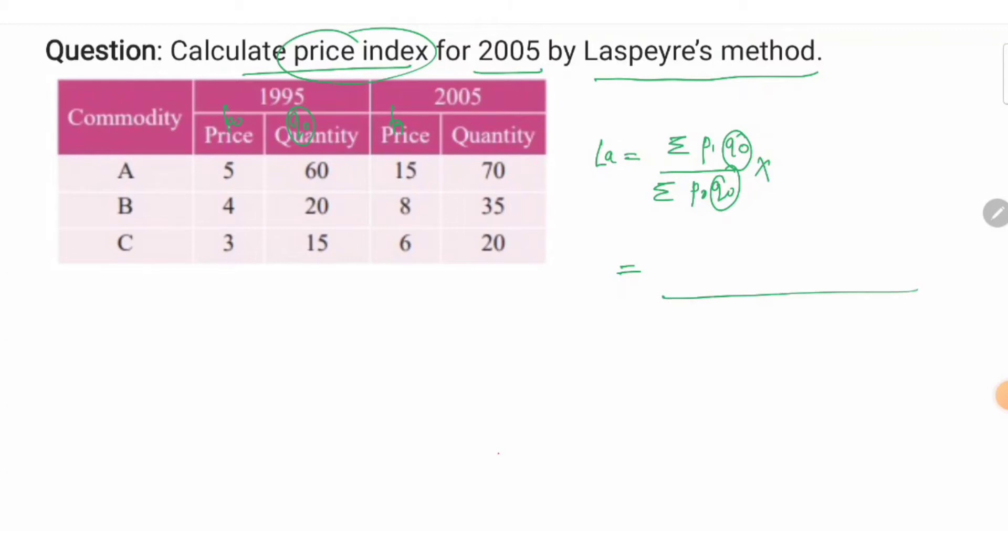Now using this formula, our Laspeyres price index will be simply the multiplication of this column with this column. So it will be 15 into 60 plus 8 into 20 plus 6 into 15.